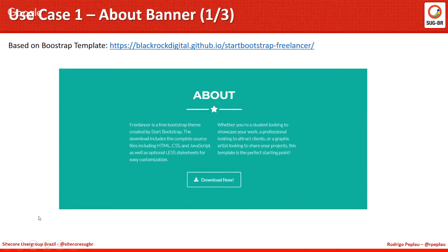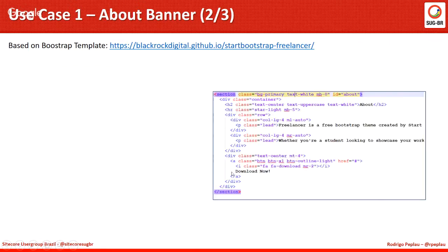The first use case is an about rendering. As you can see here, it has a title, a text, and a download button. This is the markup that we are going to implement, and I am going to show you how we are building that with grids only.